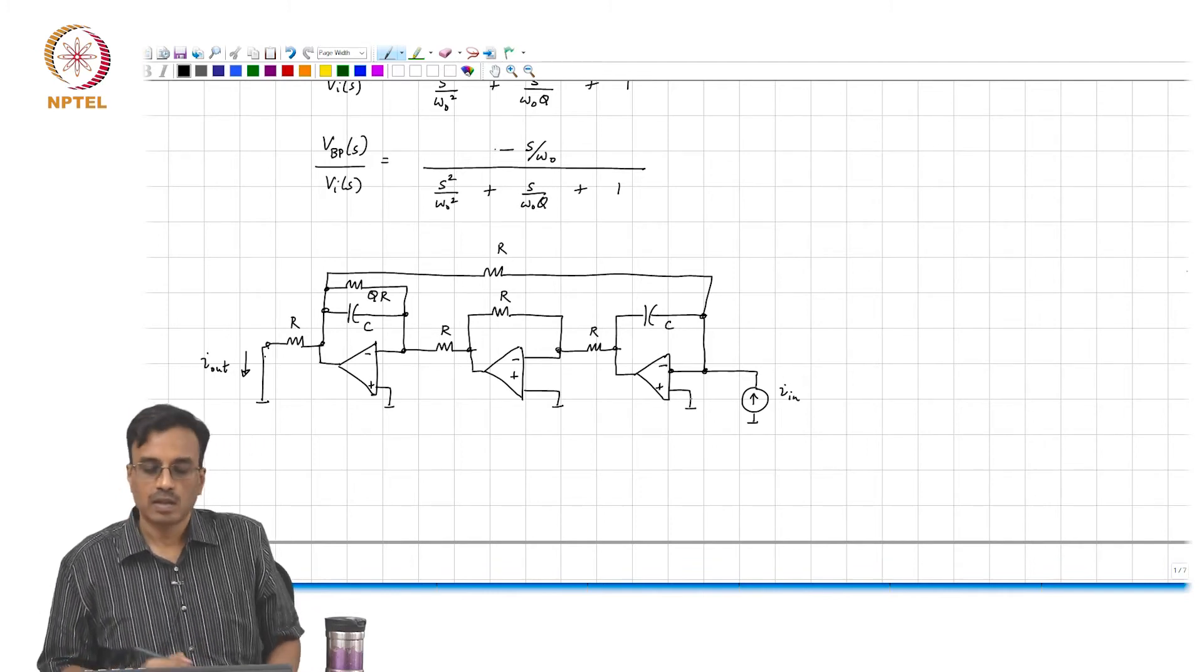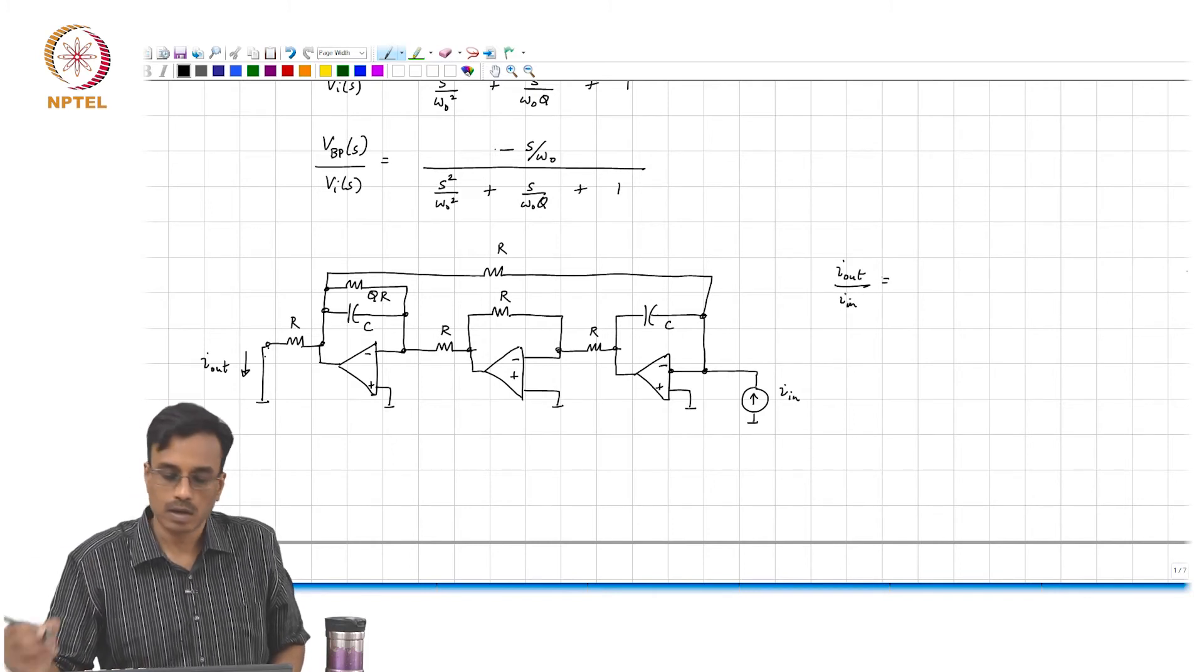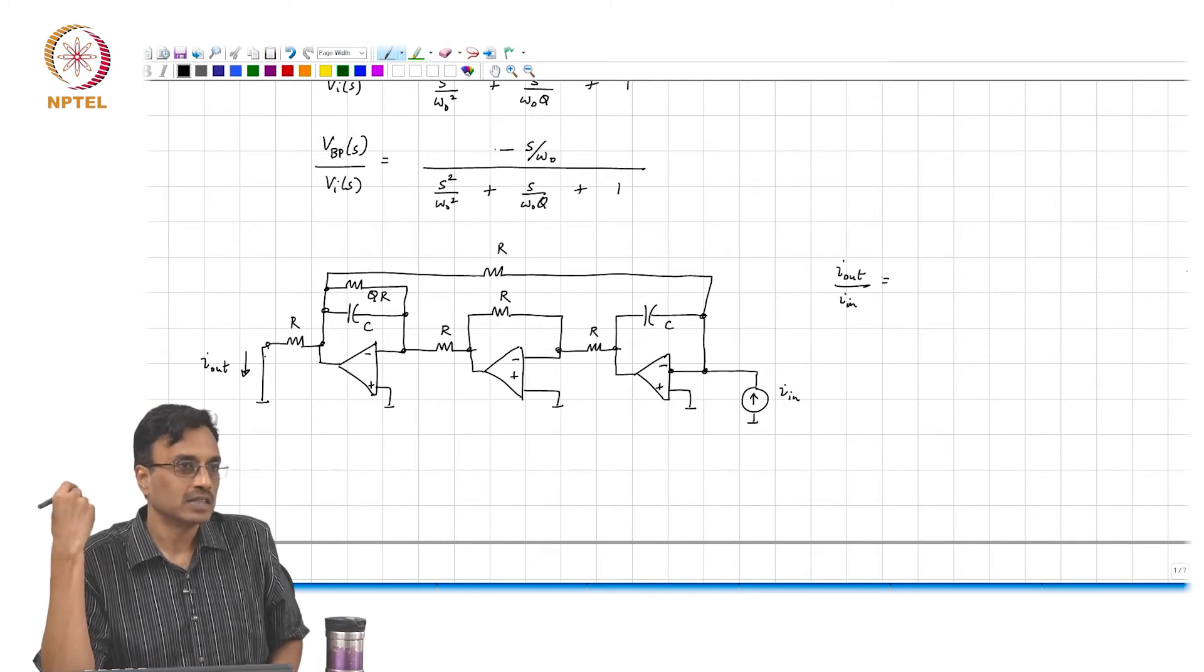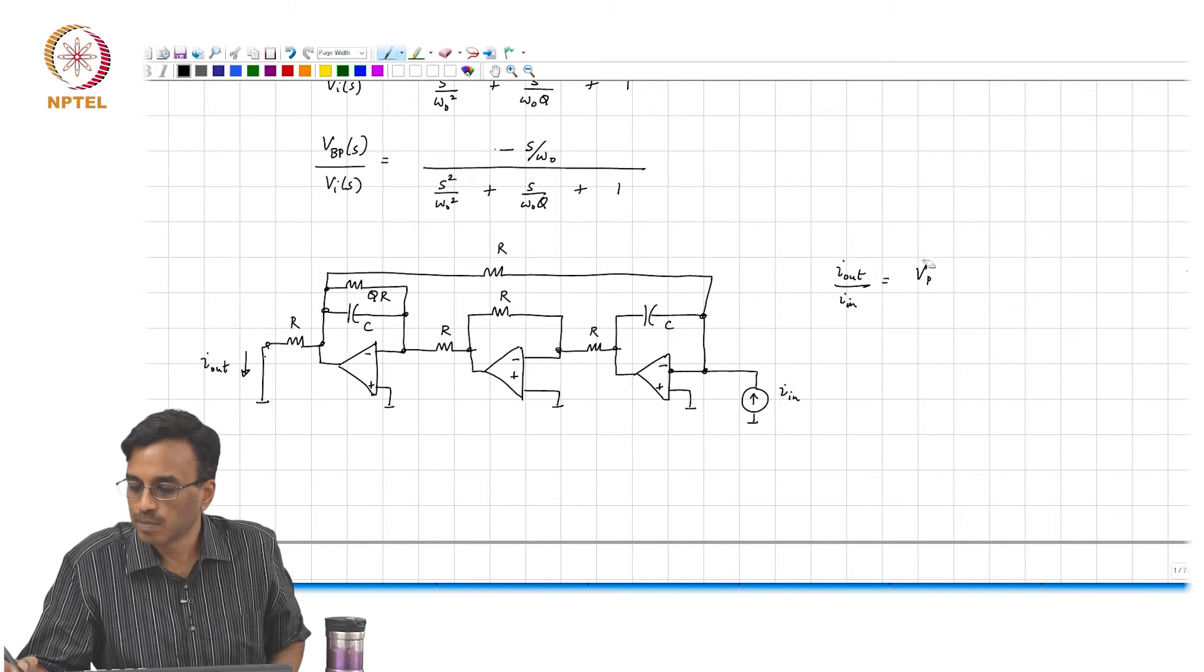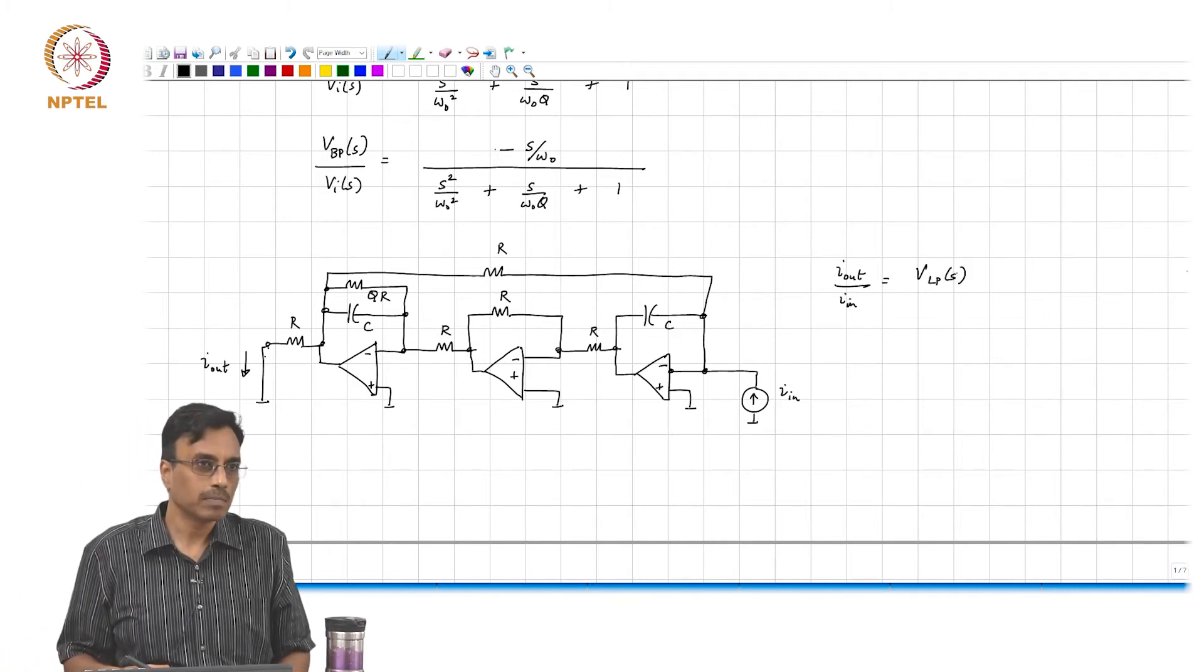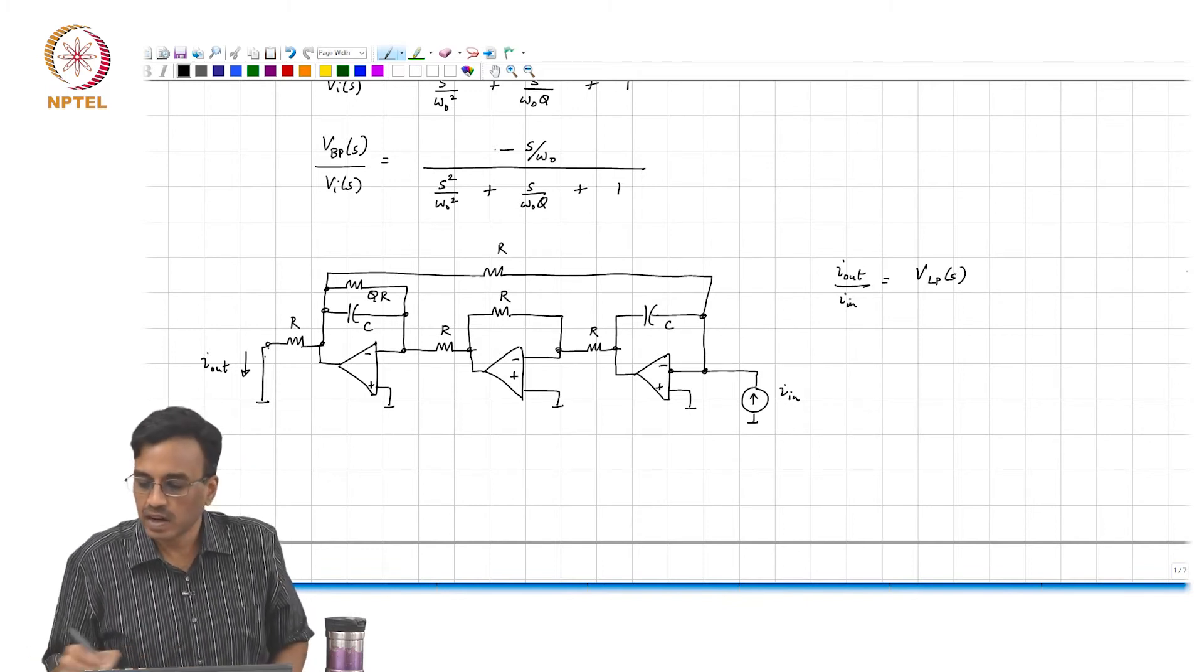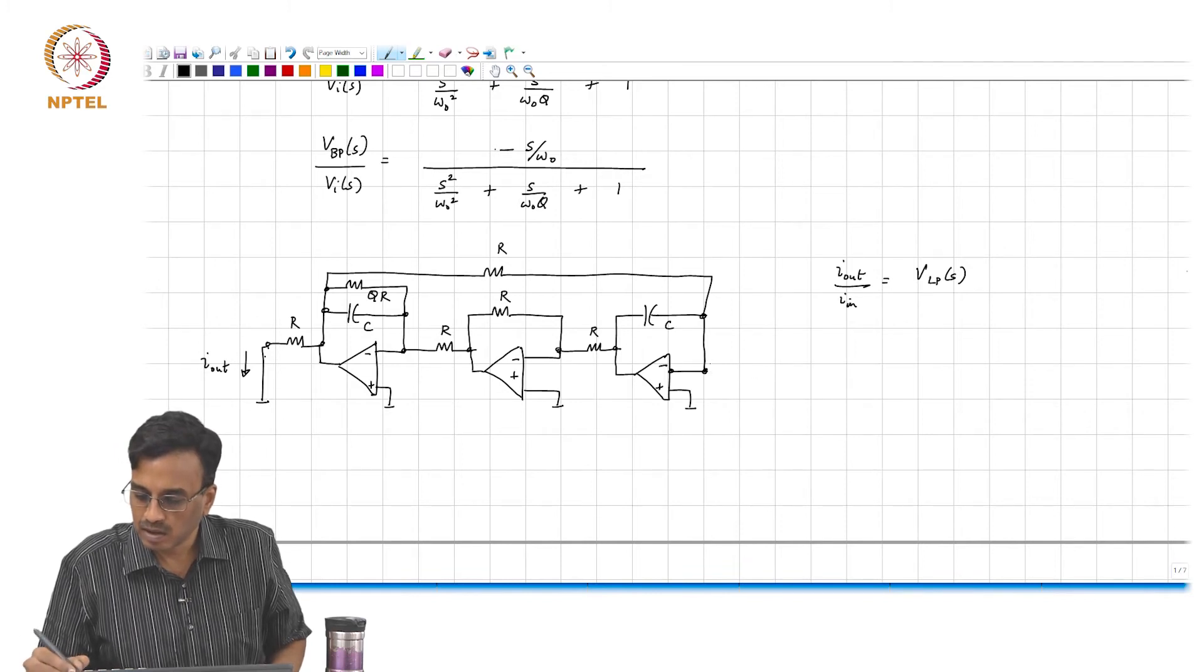So, the I out, what comment can we make about I out by I in? Is the same as the V L P of S, correct?